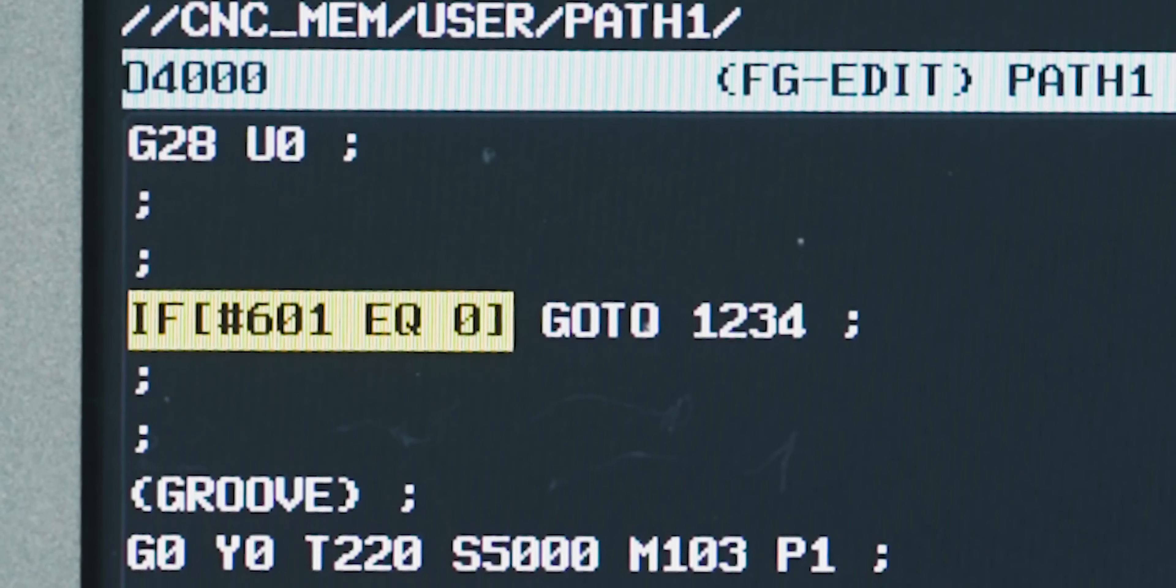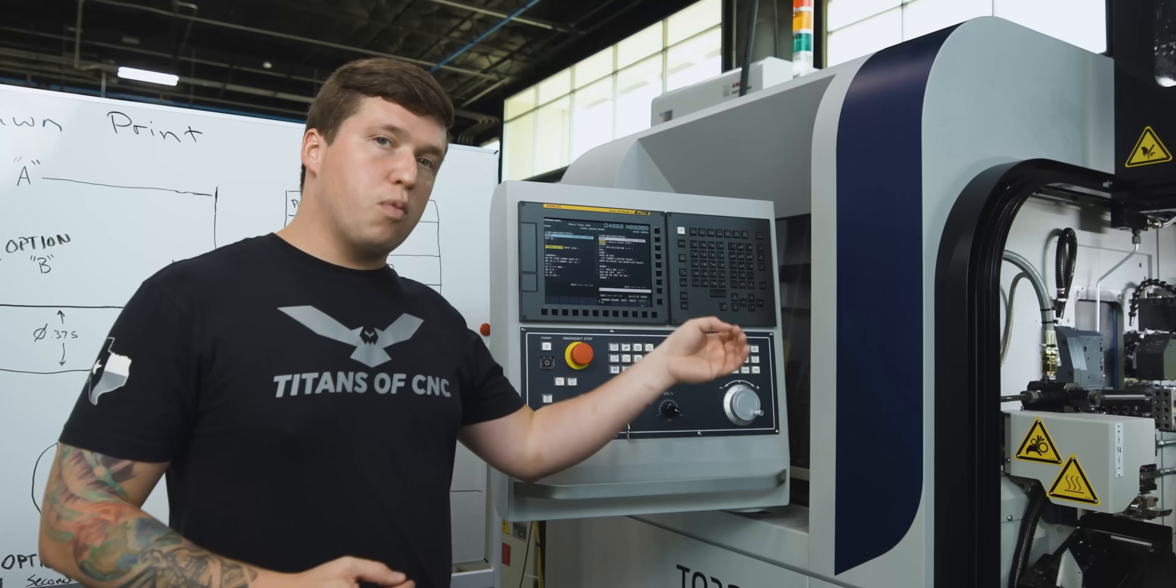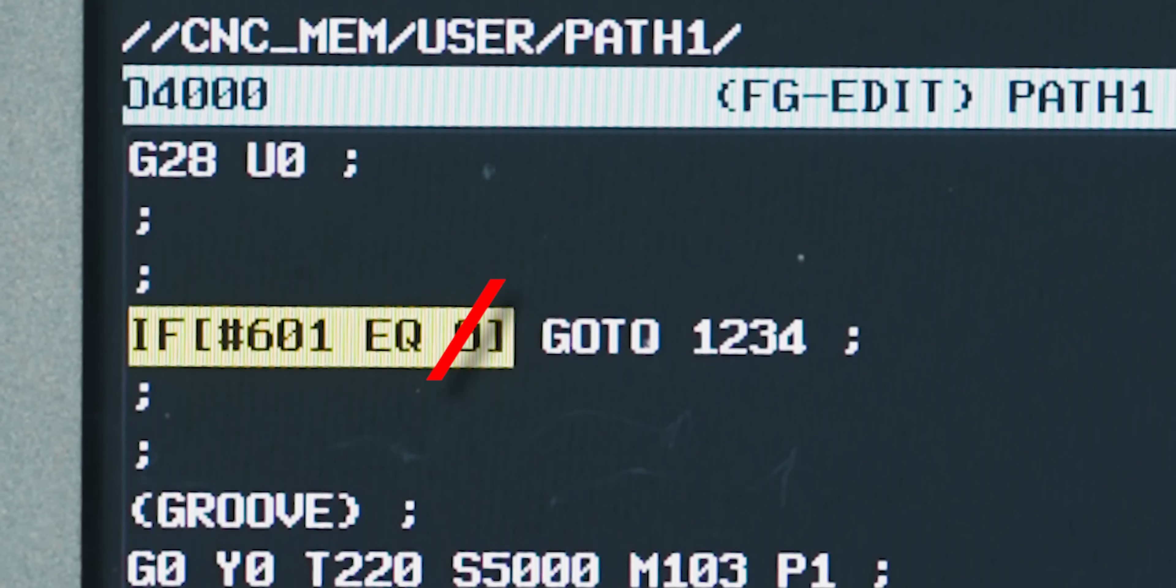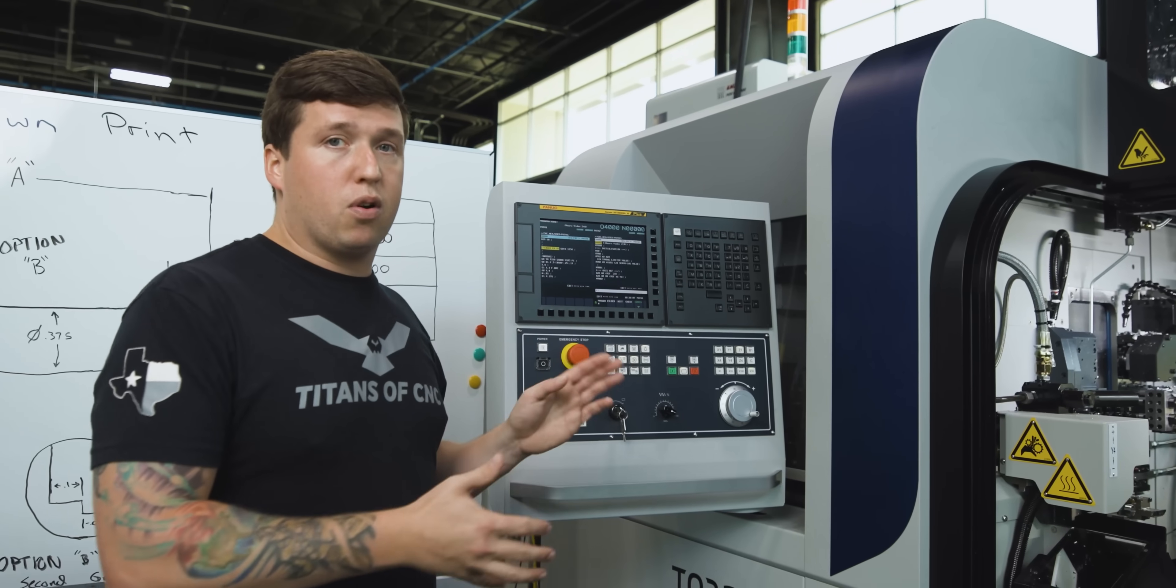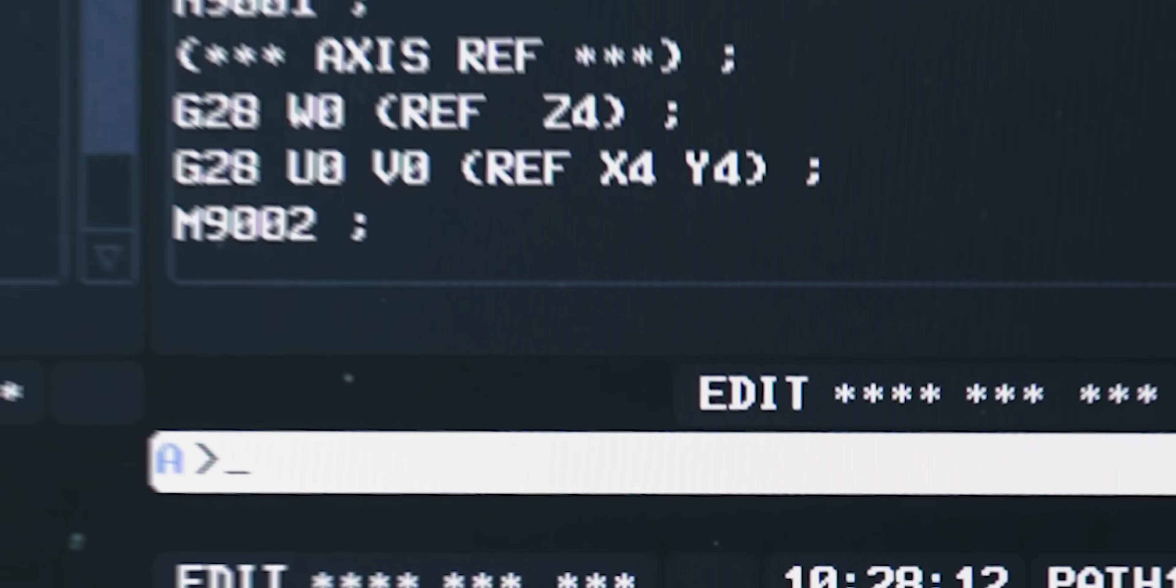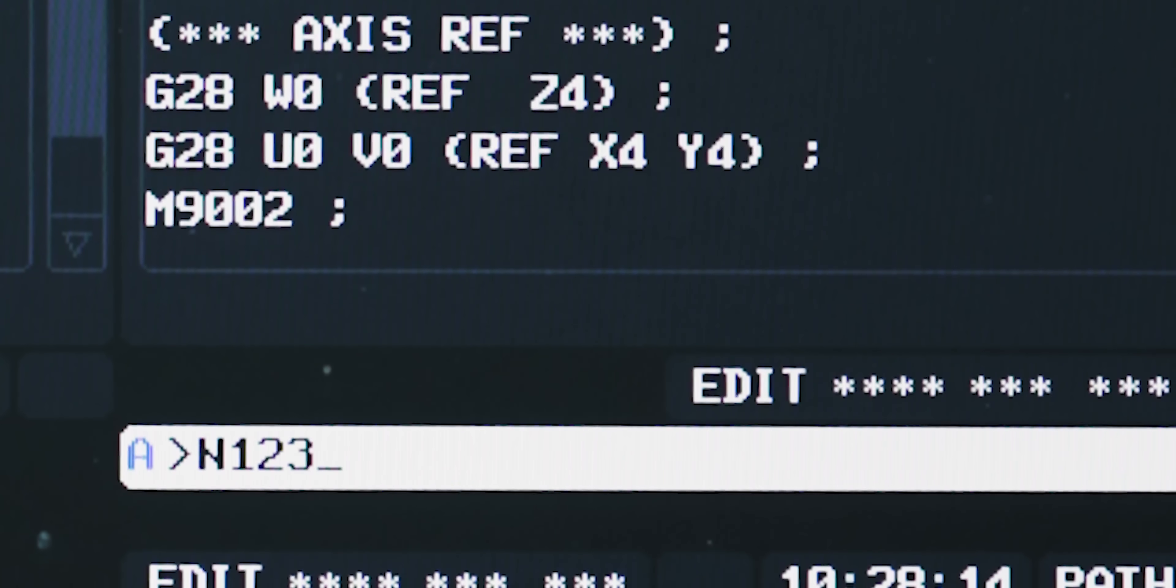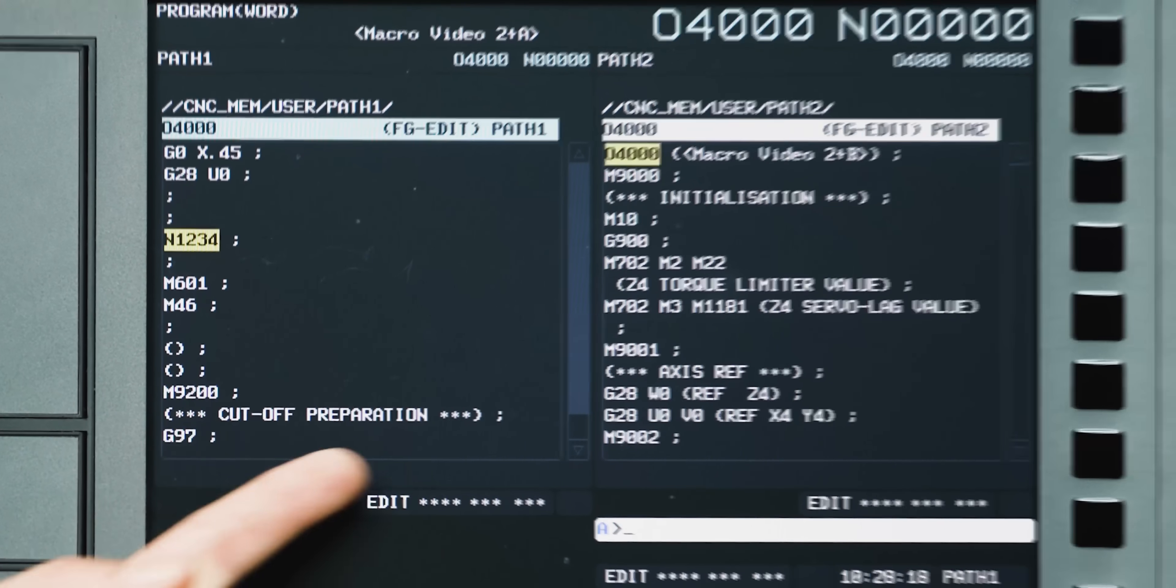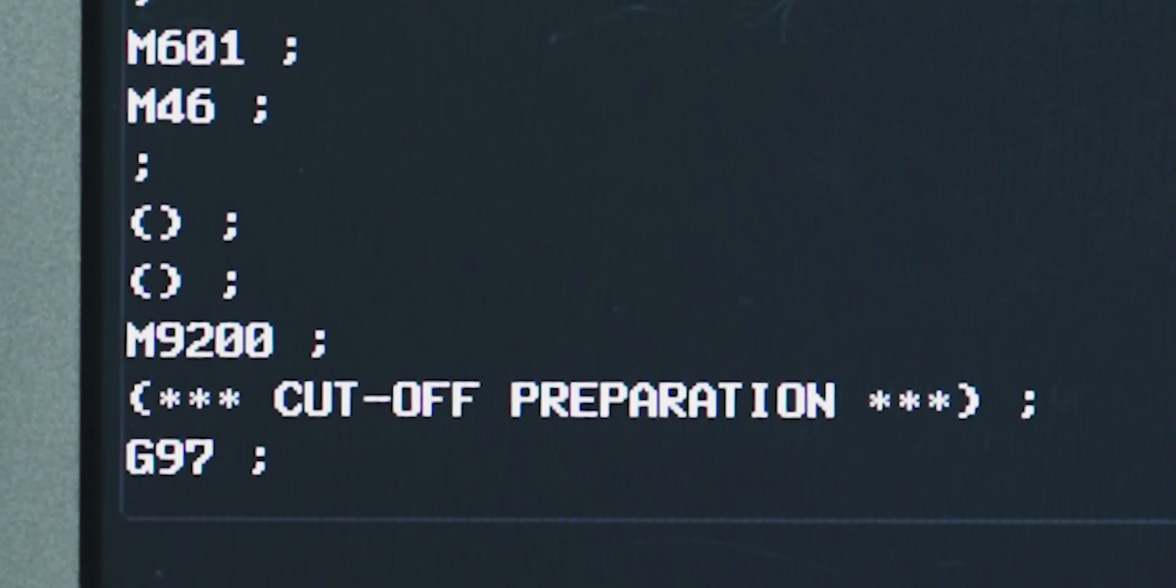If I have it as a zero, it will skip to that line and won't put the groove in. If it's anything else - which could be one, two, whatever number you want as long as it's not zero - it's gonna run this part of the program. To give you an idea of what that looks like when it skips, it's the same thing as jumping down there. You can see here this is the cutoff preparation part of the program, it's going to skip the groove.